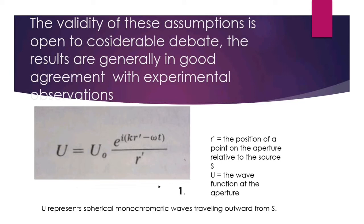The wave function u is given by u₀ e^(ikr′ − iωt) / r′, where r′ is the position of the point on the aperture relative to the source S. This equation represents spherical monochromatic waves travelling outward from the source S, which is placed in front of the aperture.